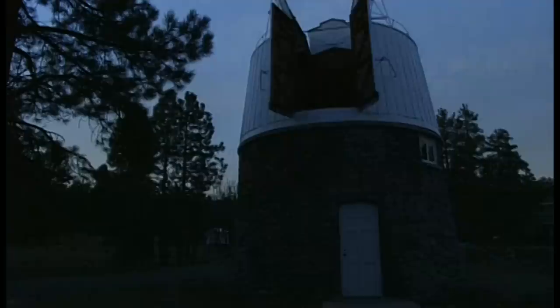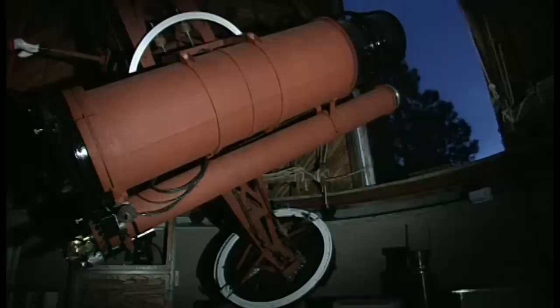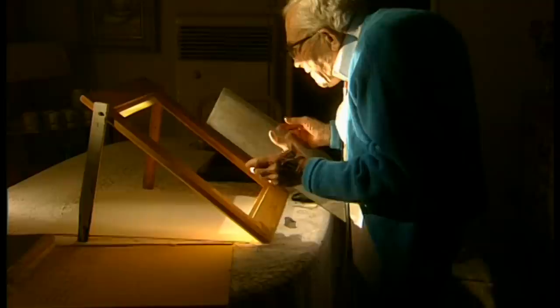Nous sommes à l'observatoire de Lowell à Flagstaff en Arizona. En 1930, on y repère pour la première fois la planète la plus éloignée de notre système solaire, Pluton. C'est l'astronome Clyde Tombow qui fait cette découverte. Il a 24 ans.